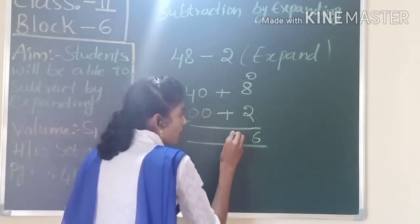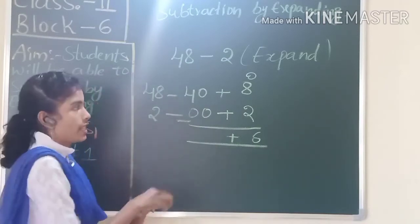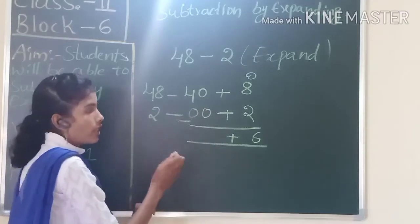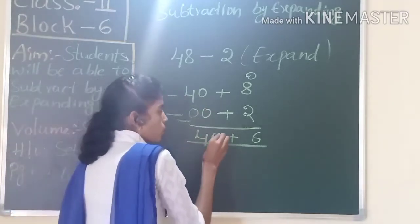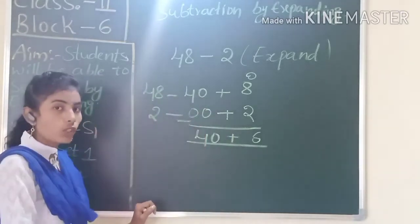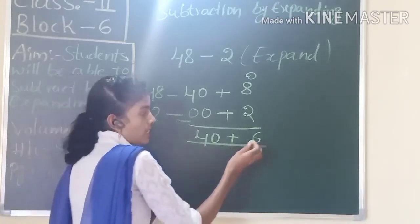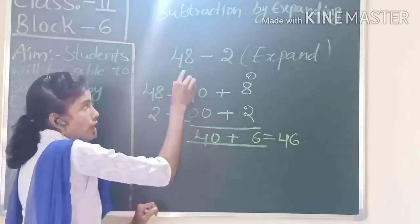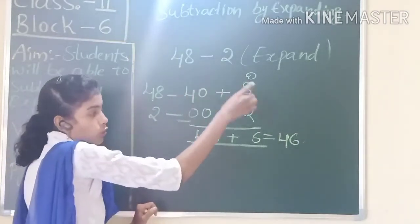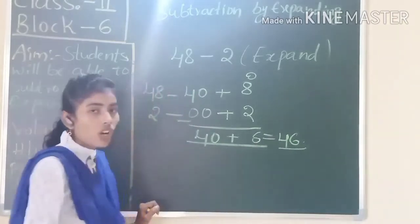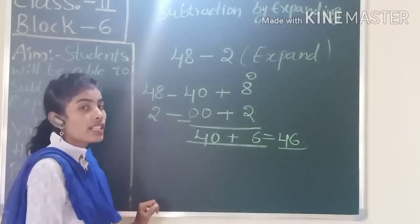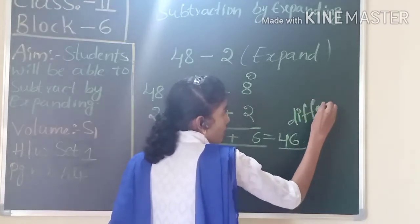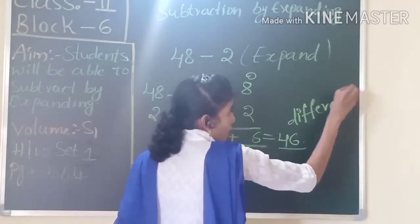The symbol for expansion is plus. Now 40 minus 0 — when we subtract 0 from any number we get the same number, so 40 minus 0 equals 40. Then 40 plus 6 equals 46. So the answer when we subtract 48 minus 2 is 46. The answer we get after subtraction is called the difference.